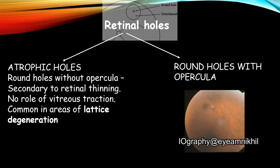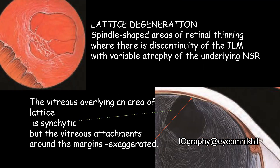A lattice degeneration is a spindle-shaped area of retinal thinning where there is discontinuity of the internal limiting membrane with variable atrophy of the underlying neurosensory retina. It is therefore a weak area which can develop holes. The vitreous overlying an area of lattice is liquefied and the attachments around its margin are exaggerated. It is due to all these factors that it can predispose to retinal detachment.